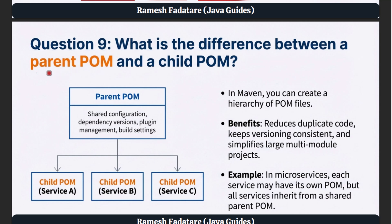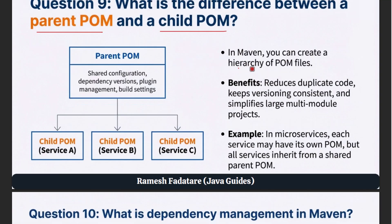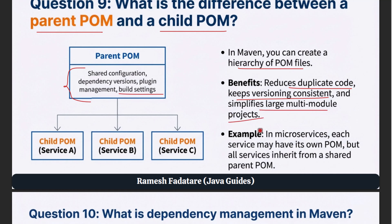Question 9: What is the difference between a parent POM and a child POM? In Maven, you can create a hierarchy of POM files. A parent POM contains shared configuration, dependency versions, plugin management, and build settings. Child projects can inherit all these settings using inheritance. This reduces duplicate code, keeps versioning consistent, and simplifies large multi-module projects. For example, in microservices, each service may have its own POM but all services inherit from a shared parent POM.